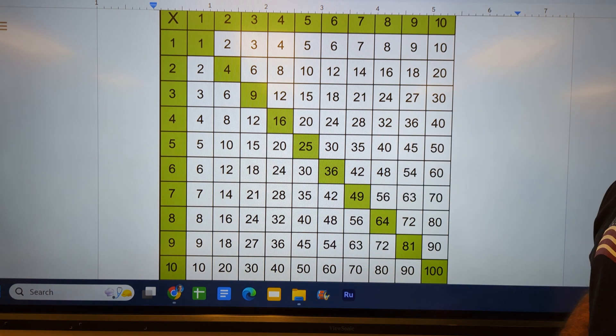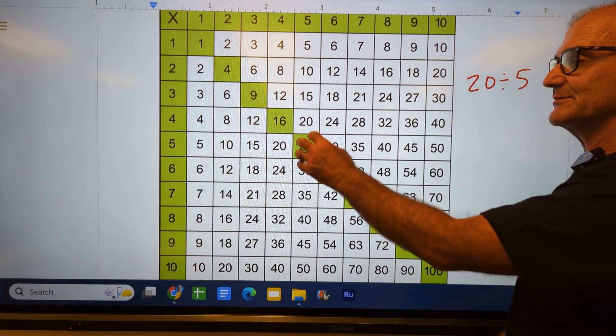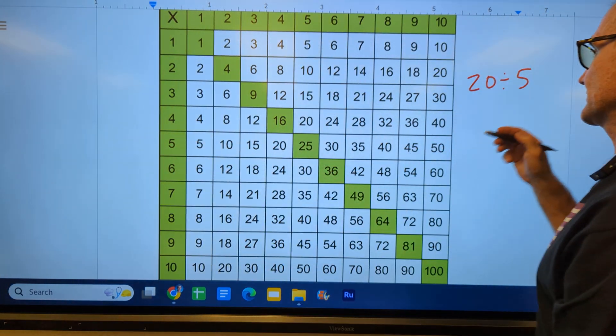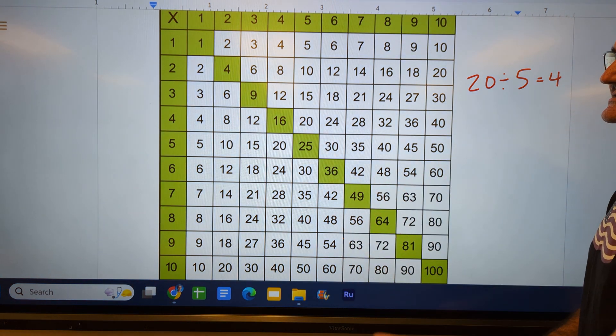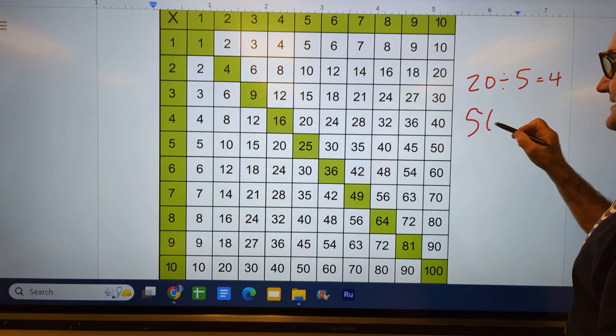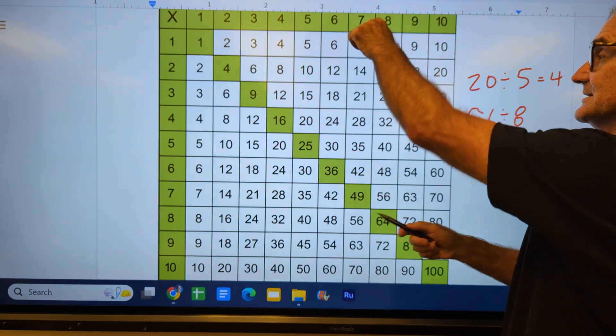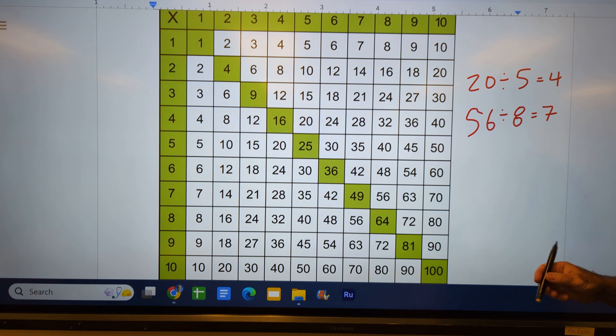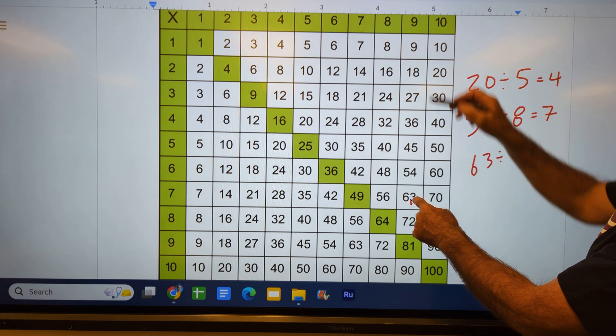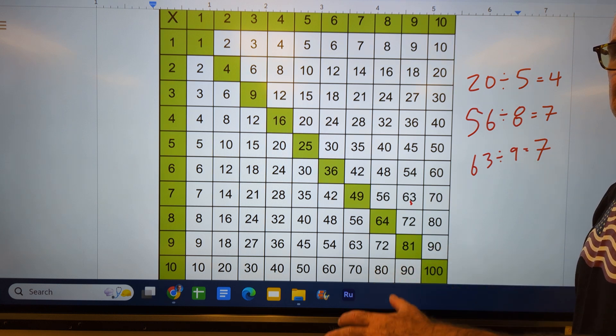That was multiplication. Now let's go over division. Division is just the reverse of multiplication. So if I have a problem like 20 divided by 5, that's saying I am in the body of the table. 20 divided by 5, what's the other number? 4. So you can see how division is not going to make sense until multiplication table is kind of ingrained in your memory. What is 56 divided by 8? Well, 56 and 8 has to be 7. What is 63 divided by 9? Then I'm going to the other side and it's 7.